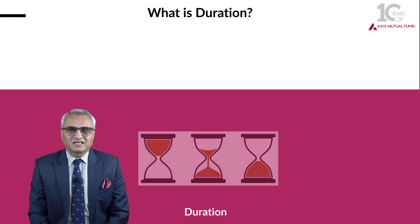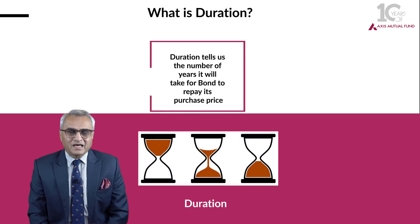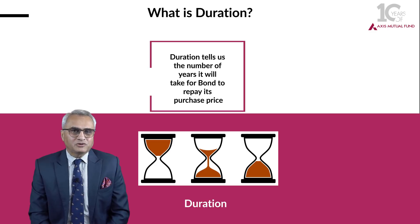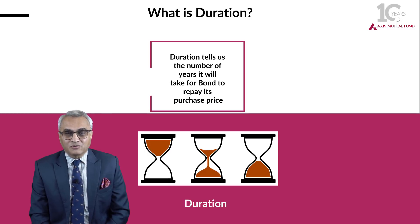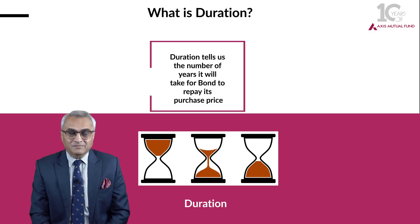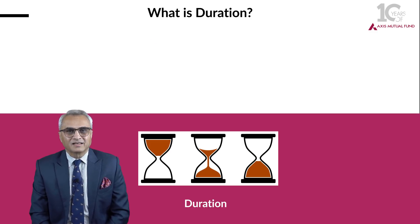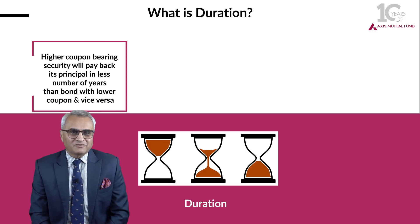Then what is duration? Duration tells us the number of years the bond will repay its purchase price. For example, let us assume there is a 10% coupon attached to a 5-year debt instrument, which means the investor will receive 10 rupees every year for the next 5 years, equal to 50 rupees on this bond. Since there is a coupon attached and you are receiving regular interest payments, the duration will be less than 5 years. A higher coupon bearing security will have a lower duration than a lower coupon bearing security.